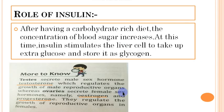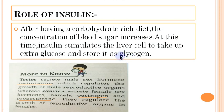After having a carbohydrate-rich diet, the concentration of blood sugar increases. Insulin then stimulates the liver cells to take up the extra glucose and store it as glycogen, so the blood glucose level is maintained. This is all about the hormones secreted from the pancreas.